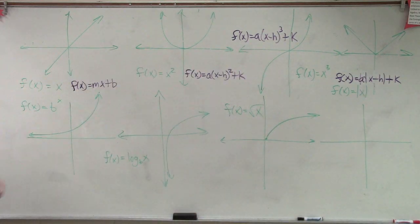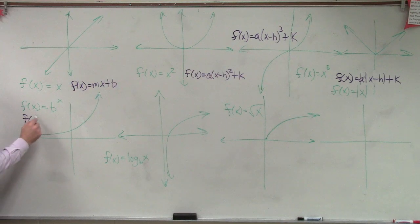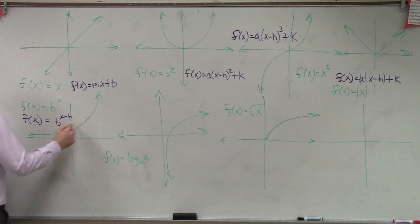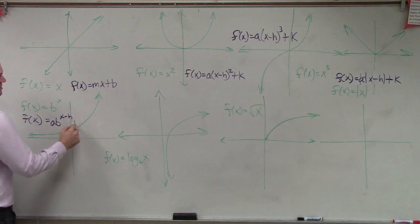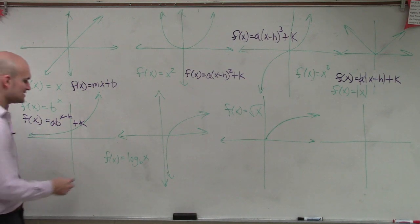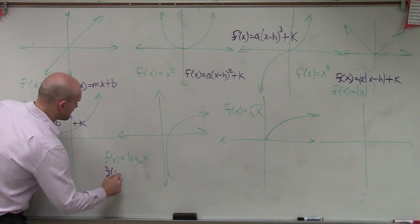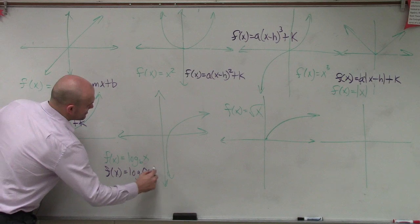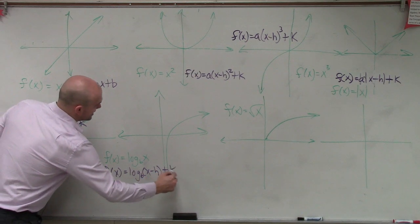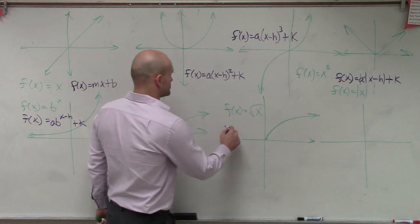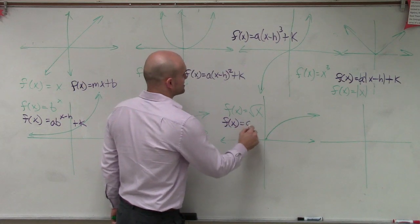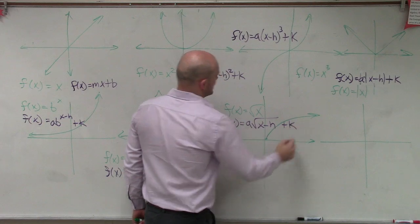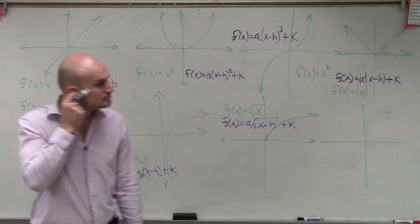Then, over here, we add b raised to the x minus h, ab raised to x minus h plus k. The transformations for this function are f of x equals log base b of x minus h plus k. Transformations for this function are f of x equals a square root of x minus h plus k.